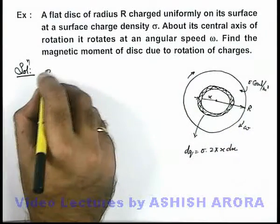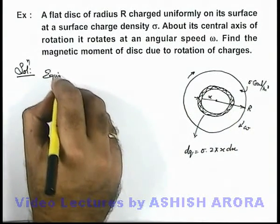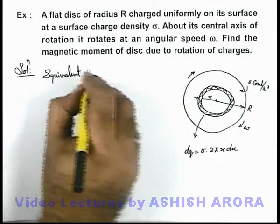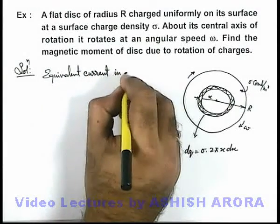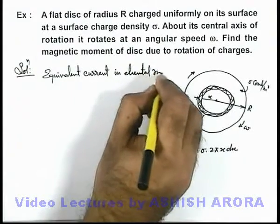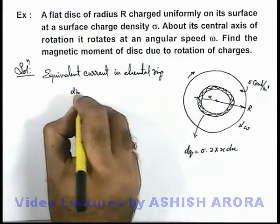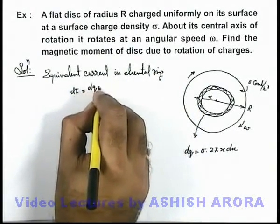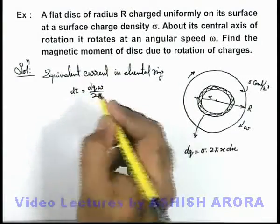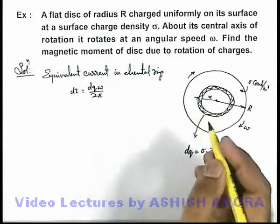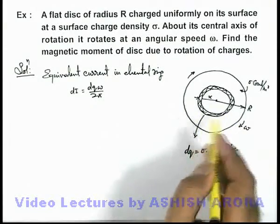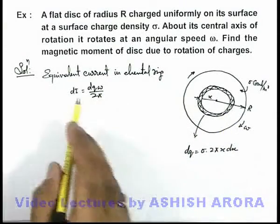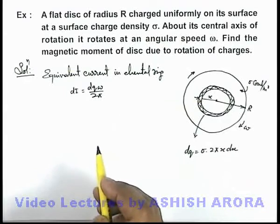Now if we calculate the equivalent current in elemental ring, then this equivalent current di we can write as simply dq omega by 2π, because dq charge is rotating at an angular speed omega, so its frequency will be omega by 2π, and current is charge multiplied by frequency.